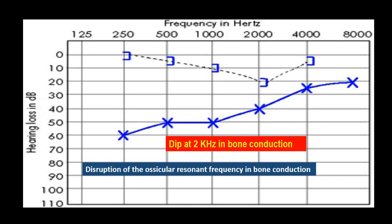This is supposed to occur due to disruption of the ossicular resonant frequency in bone conduction. The resonant frequency of the ossicles in bone conduction is around 2 kilohertz and in air conduction is around 1.2 kilohertz.